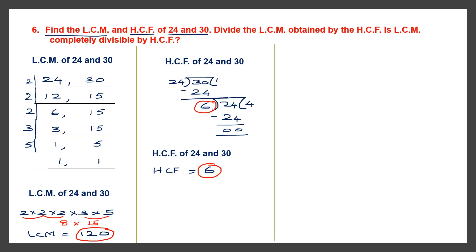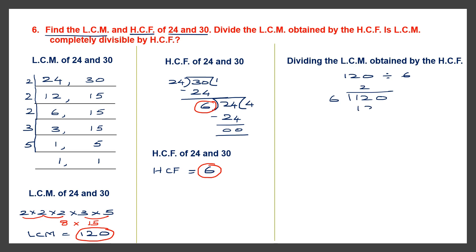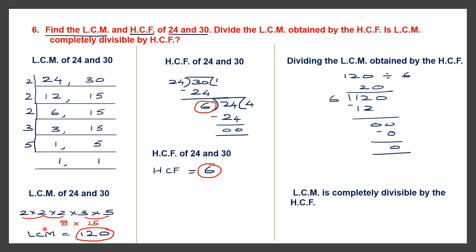The next part: divide the LCM obtained — which is 120 — by the HCF which is 6. So 120 divided by 6: 6 twos are 12, remainder 0. So the remainder is 0 because 6 into 20 gives us 120. The question is: is LCM completely divisible by HCF? Yes — LCM 120 is completely divisible by 6 since remainder is 0. LCM is always completely divisible by the HCF. You must remember: if you take any two numbers, the LCM will always be completely divisible by the HCF.